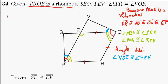And one last thing, we have vertical angles. So, vert angles. Because of vertical angles, I know that this angle is congruent to that angle, so I know angle VEO is congruent to SEP.